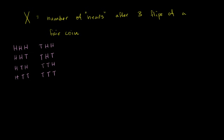Now let's think about how these relate to the value of this random variable. What's the probability that our random variable X is equal to zero? That's the situation where you have zero heads — all tails — which is one out of the eight equally likely outcomes. So P(X=0) = 1/8.